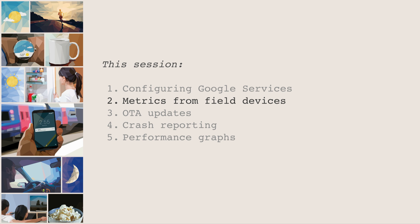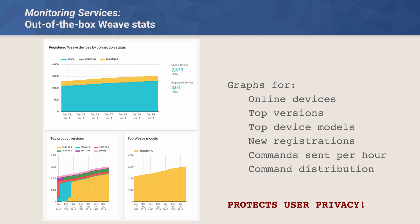Let me talk about other services besides Weave. First, metrics from field devices. If you're using Weave out of the box, there are a lot of out-of-the-box metrics. Devices retain an active connection to the Weave server, providing state updates and receiving commands from client apps. Over this service data, we collect aggregated stats — so we can show you graphs for online devices: top versions, top device models, new registrations, and the number of commands sent per hour. If you see those tank, you know something is wrong with your device.